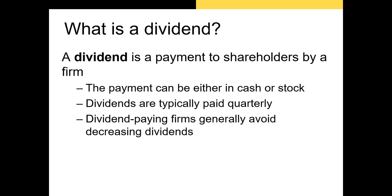Let's formally introduce the most well-known form of distribution: the dividend. A dividend is a payment to shareholders by a firm. Most firms prefer to pay cash dividends, but there are some firms that include stock dividends to shareholders regularly. Most large firms issue dividends. Dividends are paid out of cash on hand to the shareholders of record at the end of the quarter. Some firms are restricted from paying dividends based on things like capital requirements or debt covenants.